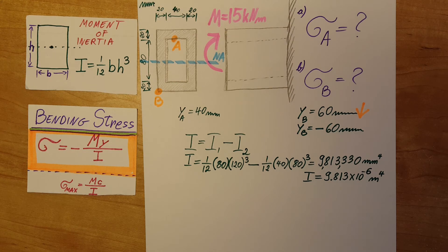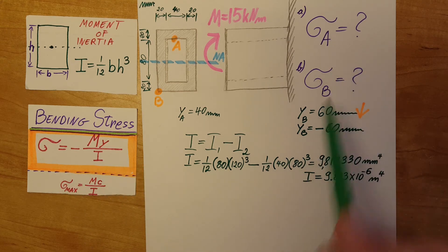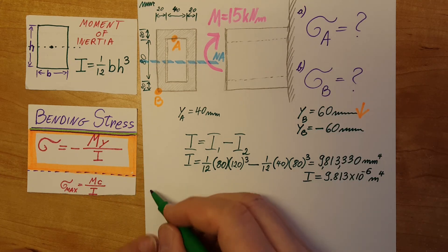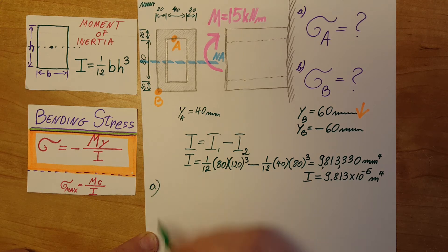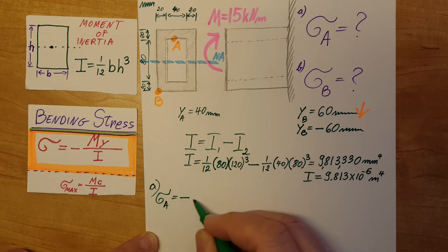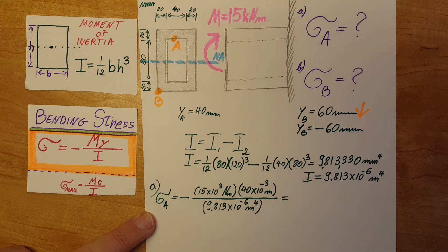Now we got to the point where we know everything that we need in our formula. Therefore, we're going to go ahead and start calculating our stresses at point A and point B. So for point A, the stress at point A will be equal to the negative, and we're going to plug in. Here it is.